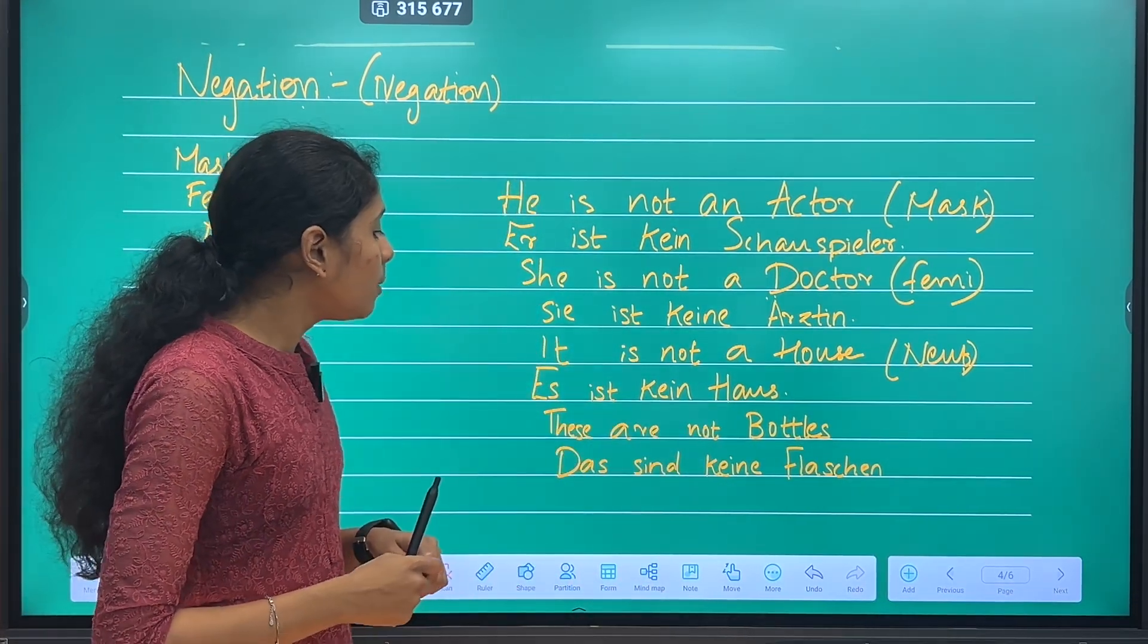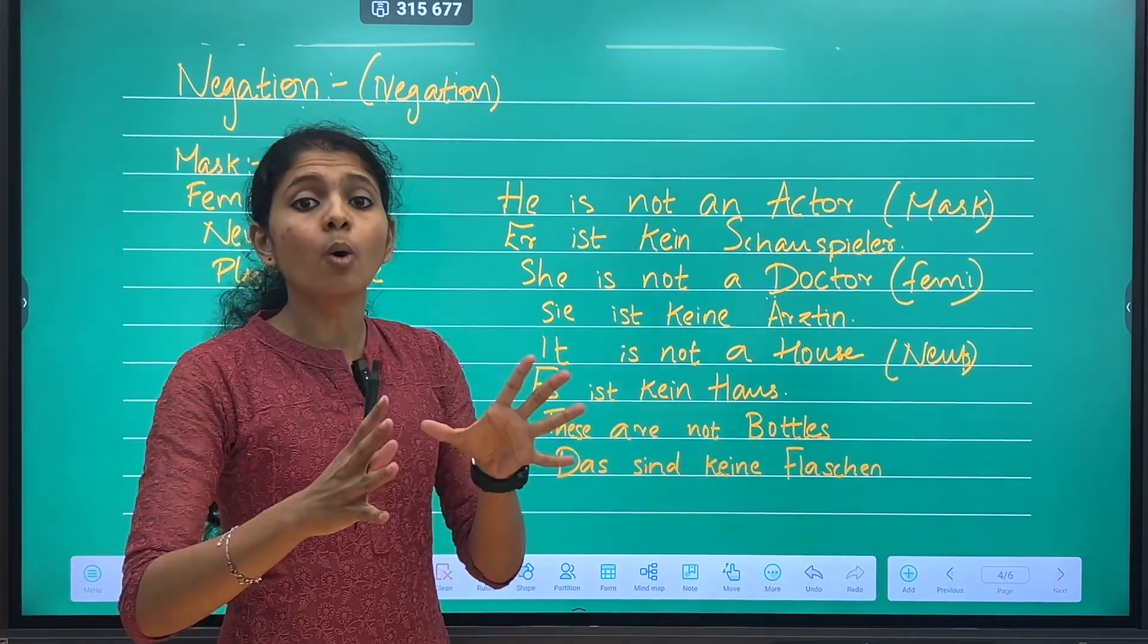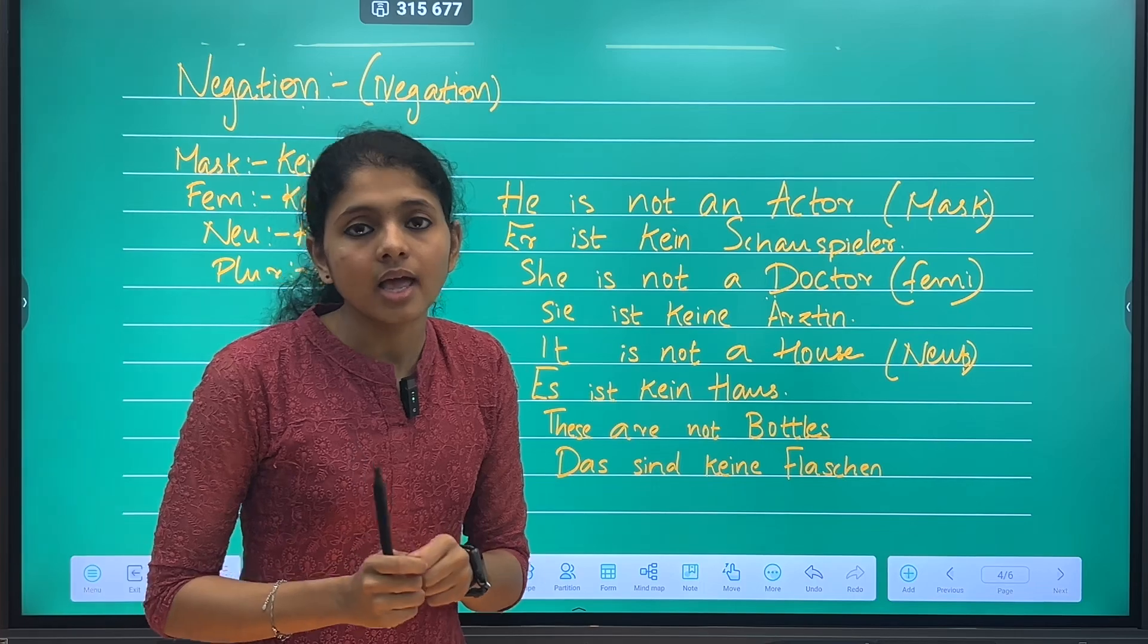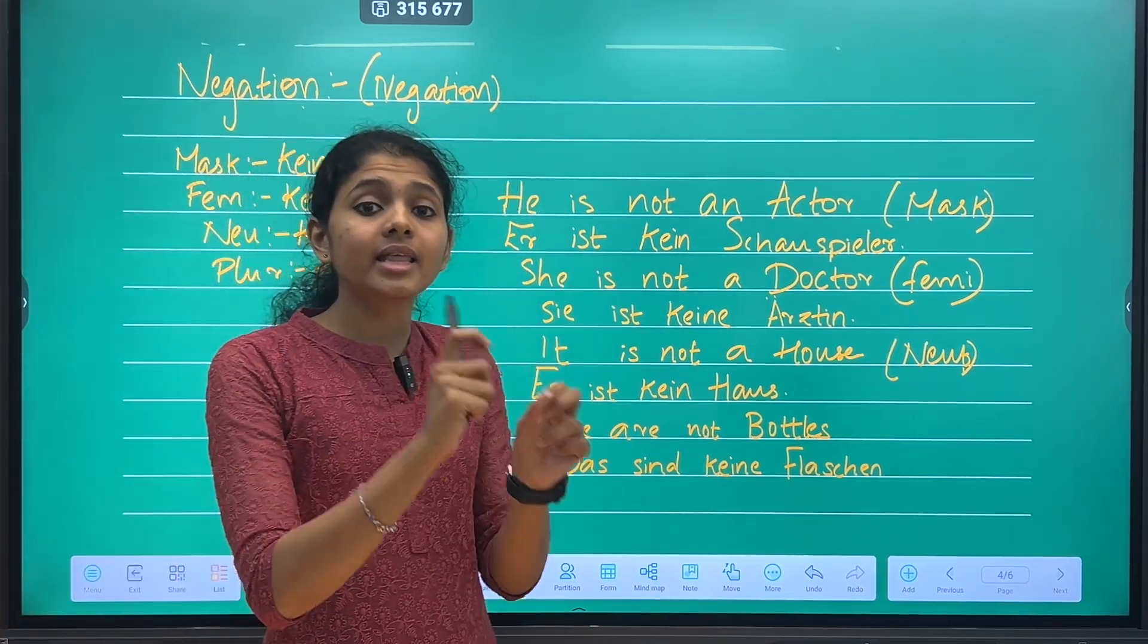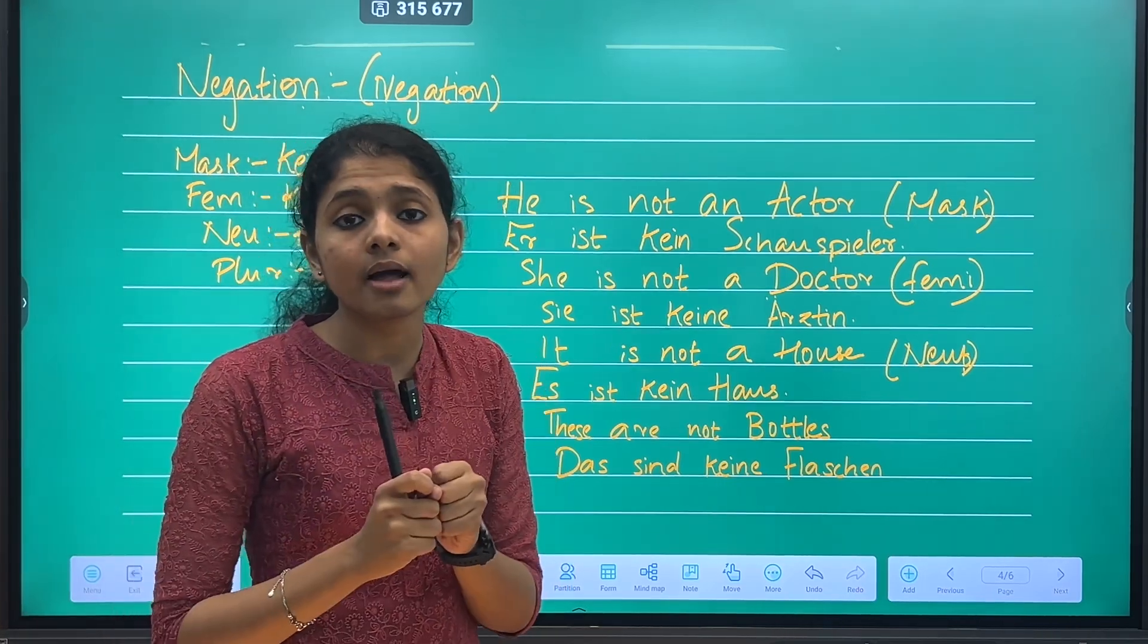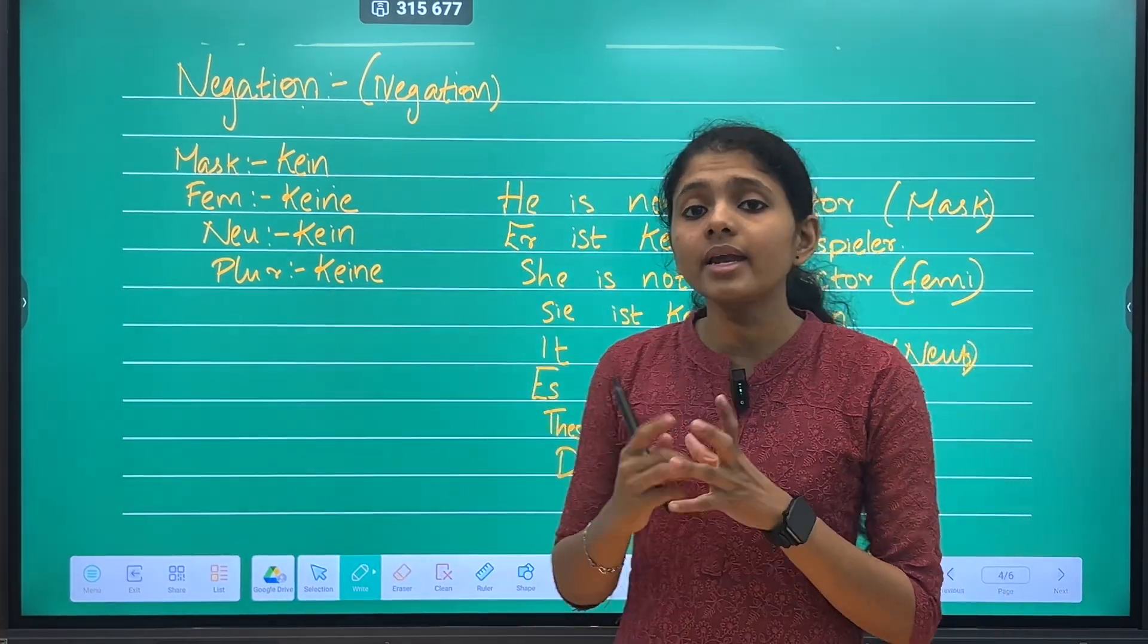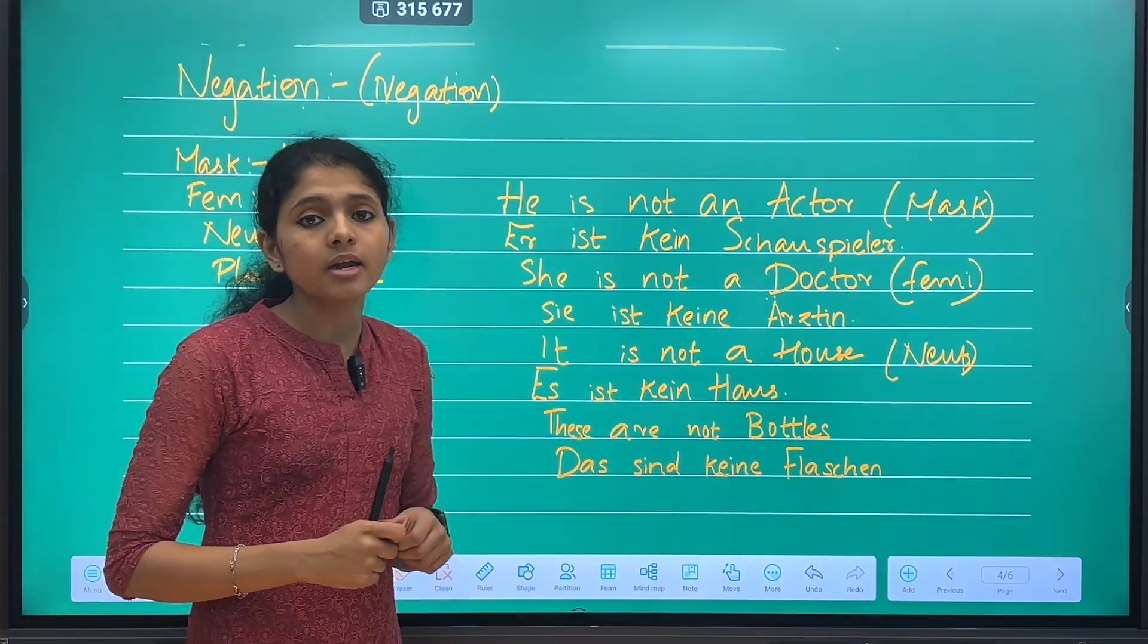Next is plural. In plural, these are not bottles. What case? This is 'sind die Flaschen'. These are bottles. We use plural. Because the bottles are plural, in plural there are no articles here. We use 'keine', then we use the bottles.